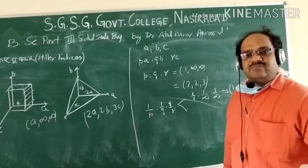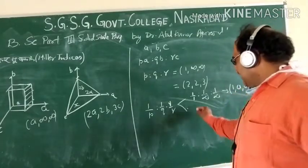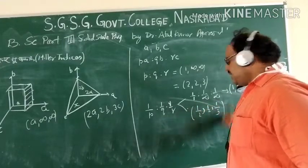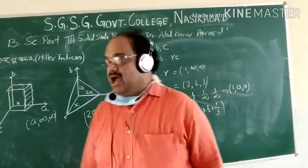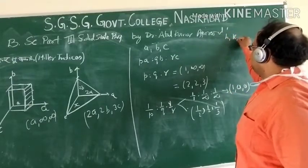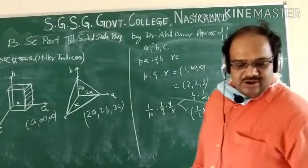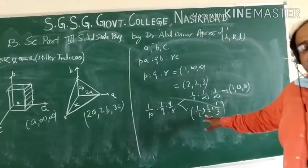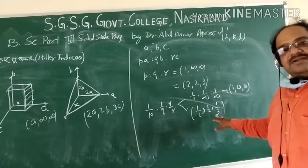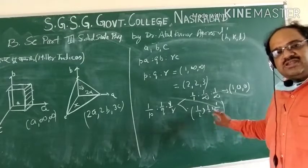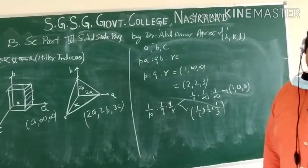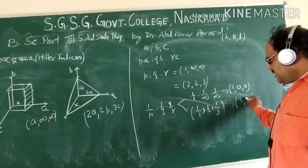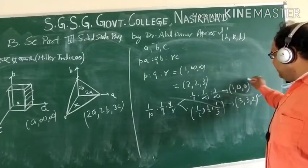This is a whole number — this is a Miller index. But in the second case, this is a fraction; the denominators are 2, 2, and 3. We take the LCM here. The LCM is 6. We multiply it with them. So 6 by 2 means 3, this is 3, and this is 2. These are the Miller indices.